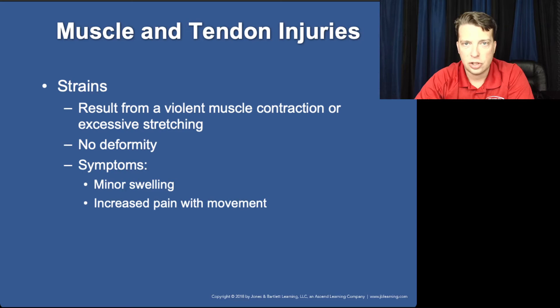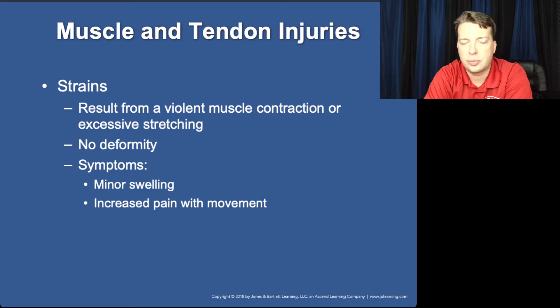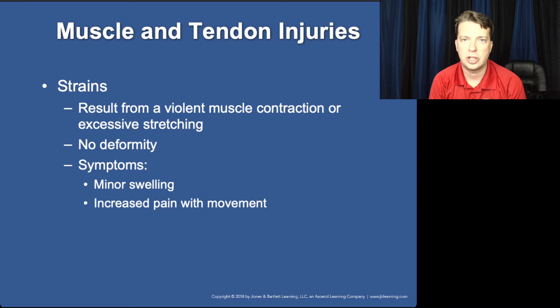Sprains deal with ligaments. Strains deal with the muscle. With a strain, you'll have a much larger area of injury because the entire muscle will hurt versus just the localized area at that tendon. When identifying the difference between sprains, strains, and fractures, you've got to look at the mechanism of injury. Mechanisms for fractures tend to focus more on high-energy direct force.